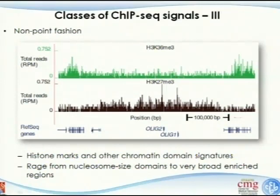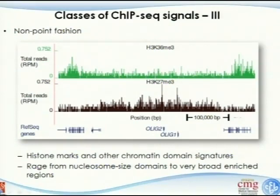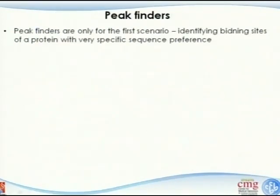The third type of ChIP-seq signal is non-point or broad enrichment, seen with histone markers. Unlike transcription factors, these signals are enriched across broad genomic regions — from nucleosome-sized domains to very wide regions spanning multiple genes, potentially tens of thousands of bases. We will not cover this type today; it will be discussed next lecture on epigenetic regulation. Today we focus only on the first type: peak detection for sequence-specific transcription factors.